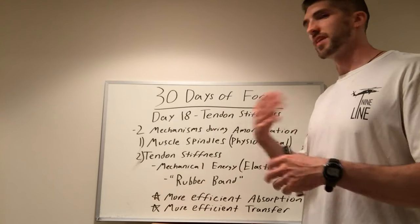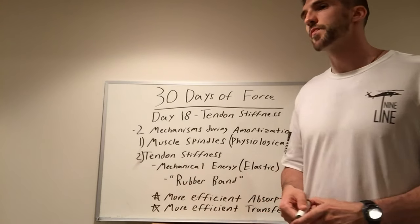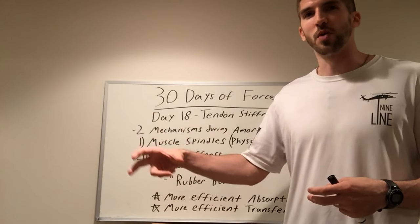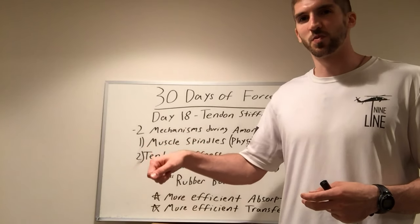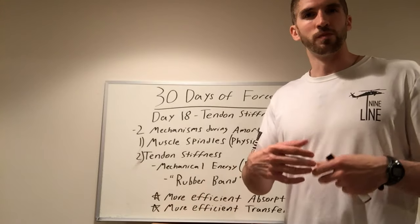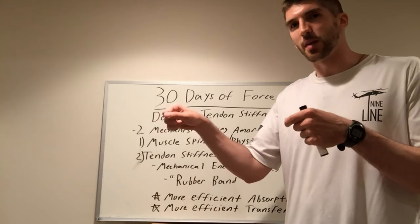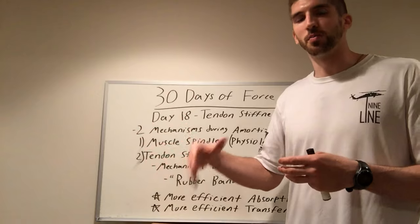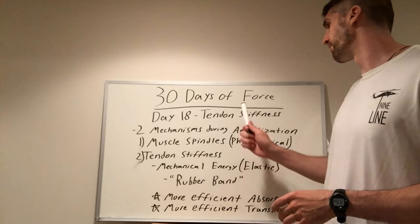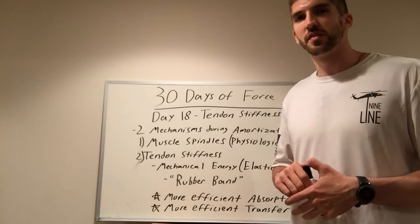If things got confusing, just think of that rubber band example. We have two rubber bands — one fresh and brand new with all its tightness, stiffness, and snap, and the second worn out and looser. If I pull both up to the same height, which one snaps harder and produces more force? The first one, the tighter one. That's the same concept with tendon stiffness.